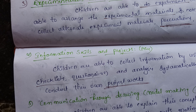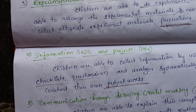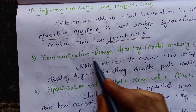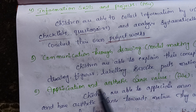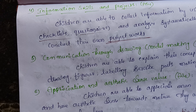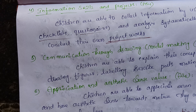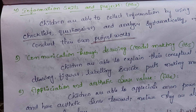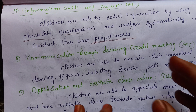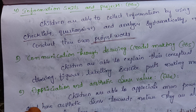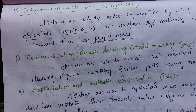The next academic standard is communication through drawing and model making. Children are able to explain their conceptual understanding by drawing figures, labelling described parts, making models, and plotting graphs. If there is no label name provided, they should still be able to communicate visually.